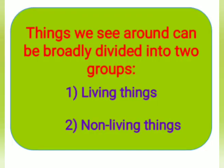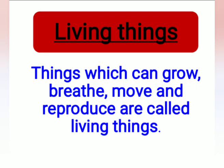Things we see around can be broadly divided into two groups: living things and non-living things. Living things: things which can grow, breathe, move, and reproduce are called living things.